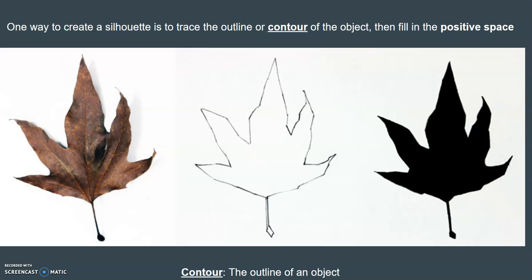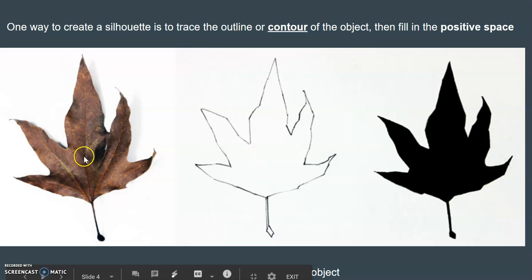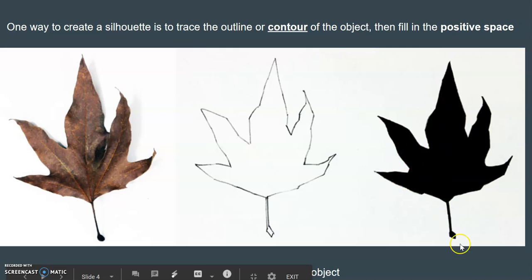Here on the left you can see a leaf, and inside it you can see the veins and different colors. If we just outline it, you have the image in the middle — a contour of the leaf. And if we fill it in and make it all dark like the one on the right, this is a silhouette.